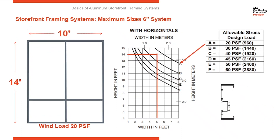Here's a six inch deep system. There are options to go from a four and a half to a six inch. The six inch allows an architect to take a storefront elevation above that typical limitation of about 10 feet to possibly up to maybe 14 feet, again driven by the wind load. You can see our verticals are 14 foot tall and they're five foot spacing. On the chart, where those two lines meet, we're meeting 20 PSF. If you were 30 PSF, we wouldn't make it. But there is the option of going to a six inch deep system that will allow you to reach some taller spans.